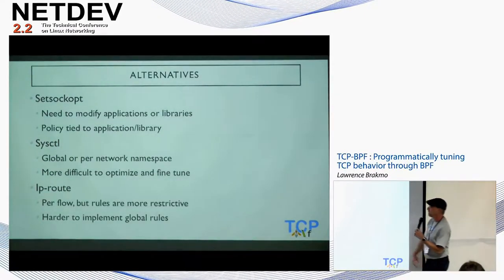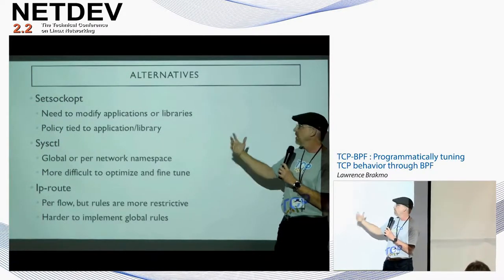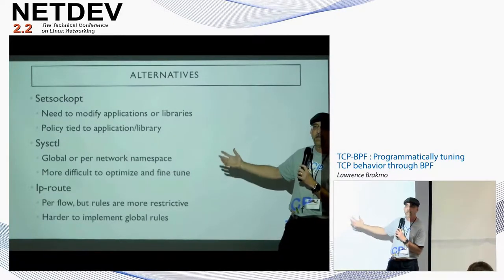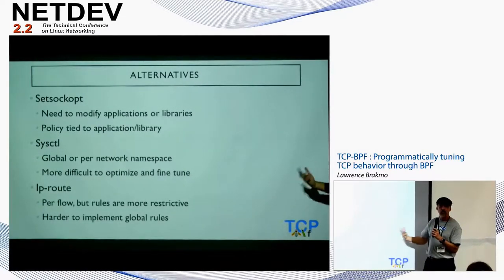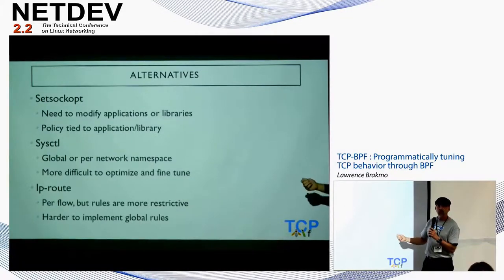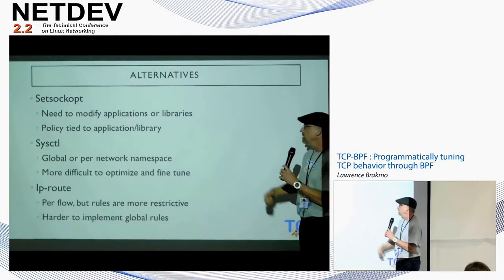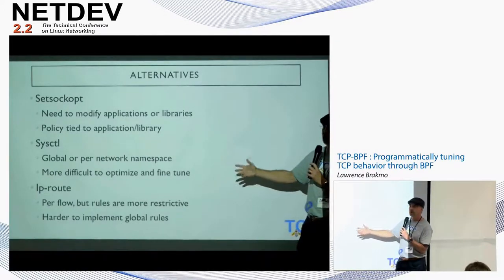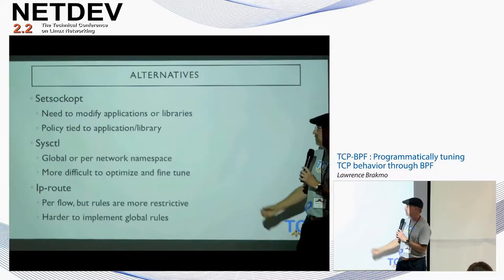What are the alternatives? For a lot of these, we can use setsockopt to set parameters like buffer sizes, but the drawback is that we need to modify the applications or libraries. Typically, the people doing those applications or libraries are not necessarily networking experts — they may not know what the best thing to do is, or the conditions may change with time and then you need to change the libraries or applications, which is harder. Also, the policies are tied to the application or library, which is not ideal. We can use sysctls, but these are very coarse controls, even with network namespaces.